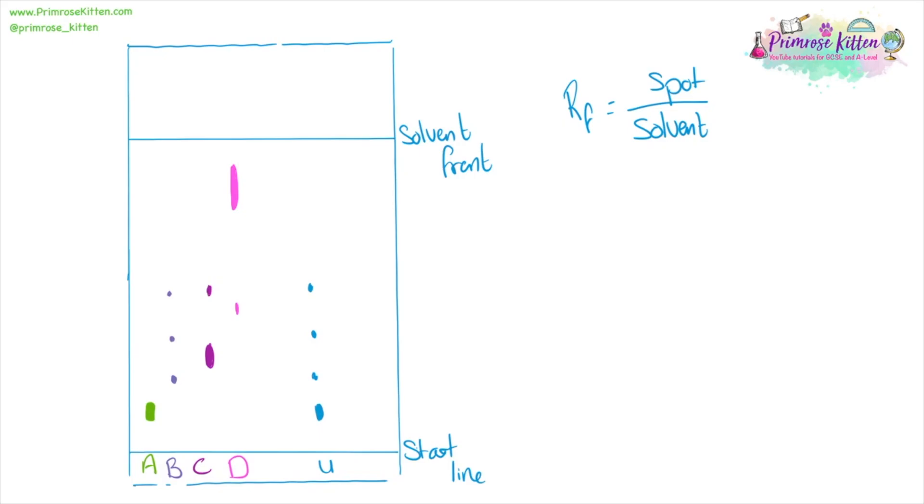Now U is a mixture of two different things. The first thing you may need to do is work out what it is a mixture of. So we have this spot here which lines up with this spot over here. This little spot lines up with this little spot here.